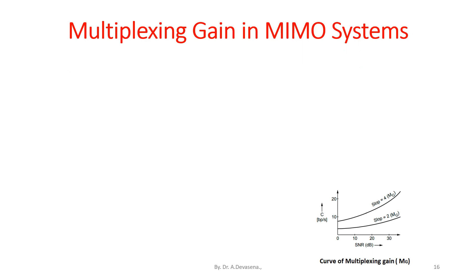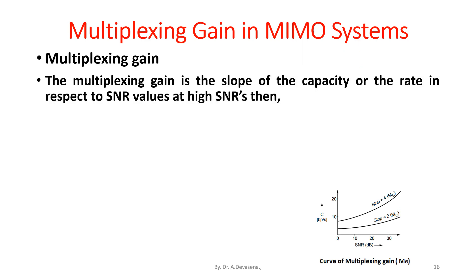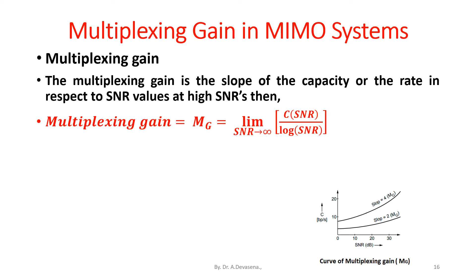Multiplexing gain is the slope of the capacity or the rate with respect to SNR values at high SNRs. Multiplexing gain M_G = limit as SNR tends to infinity of E[ C(SNR) / log(SNR) ].